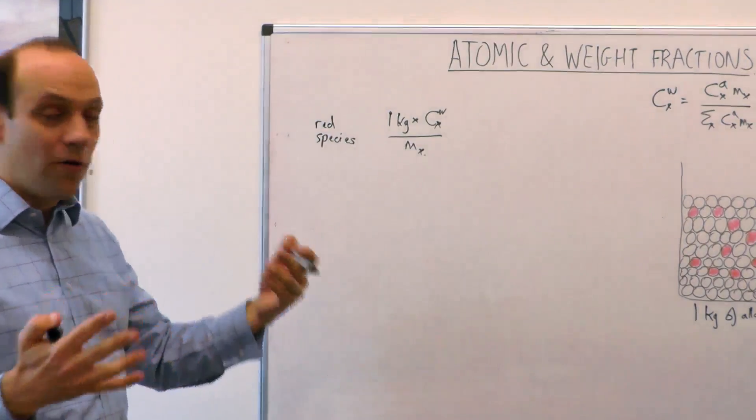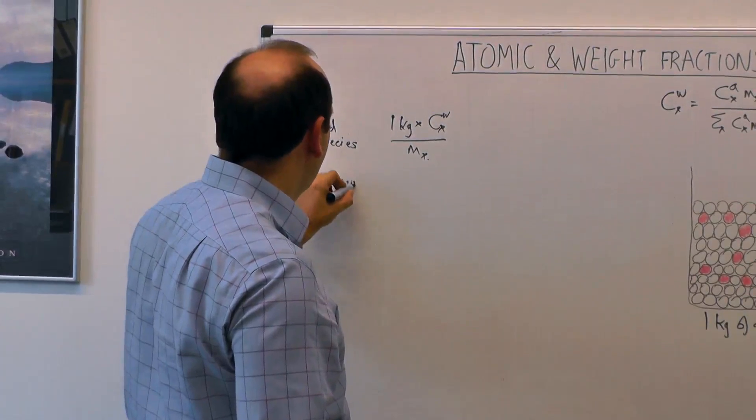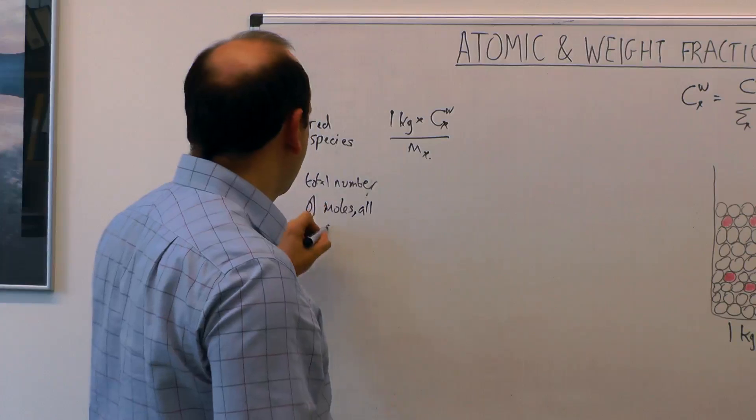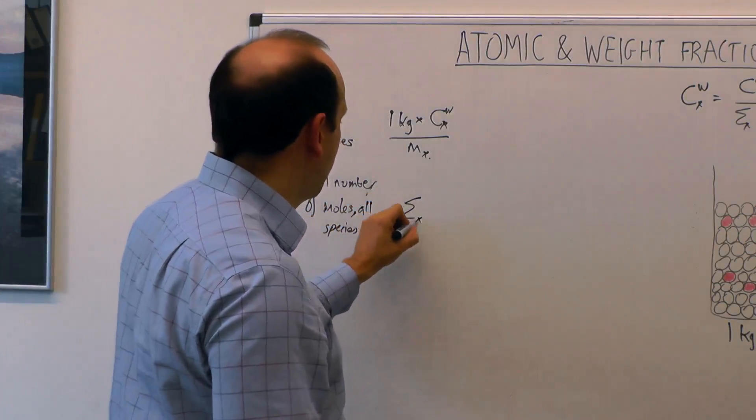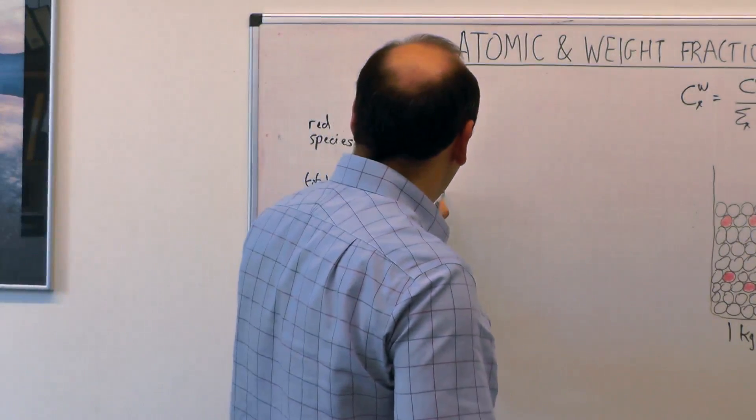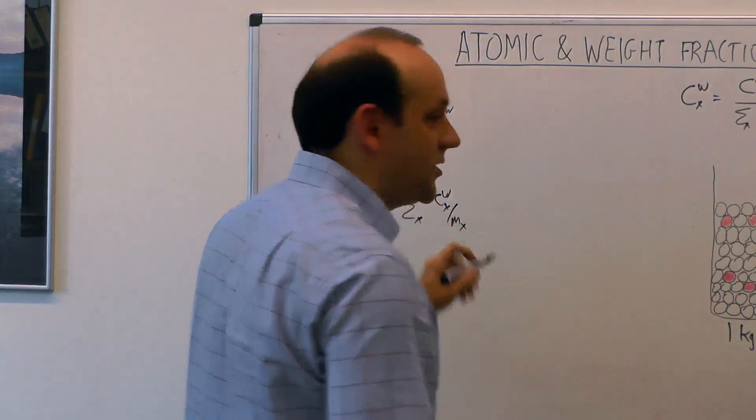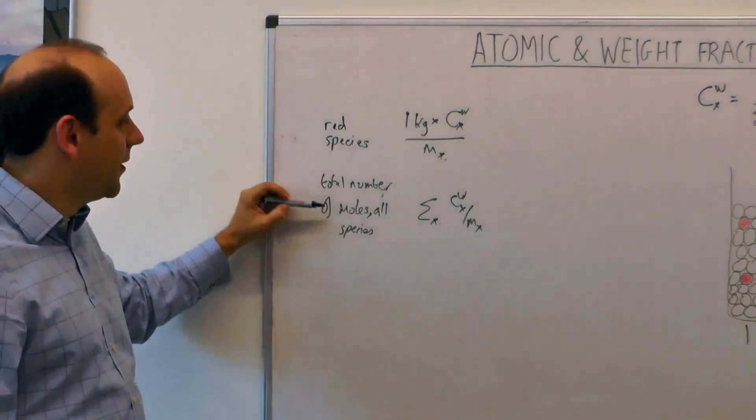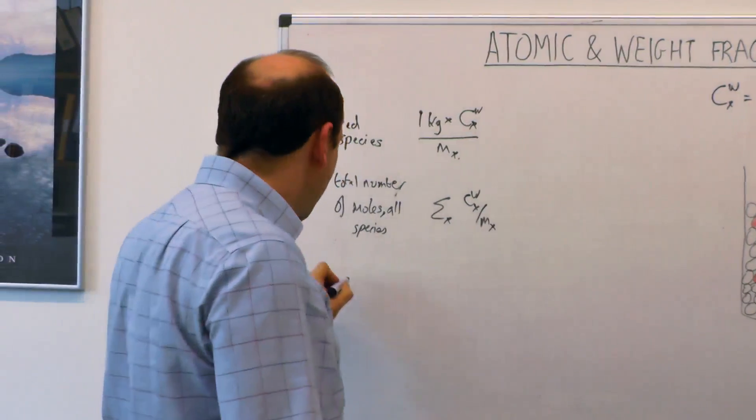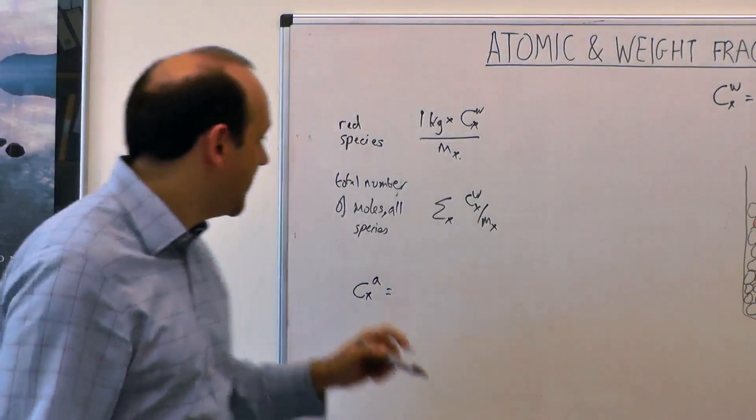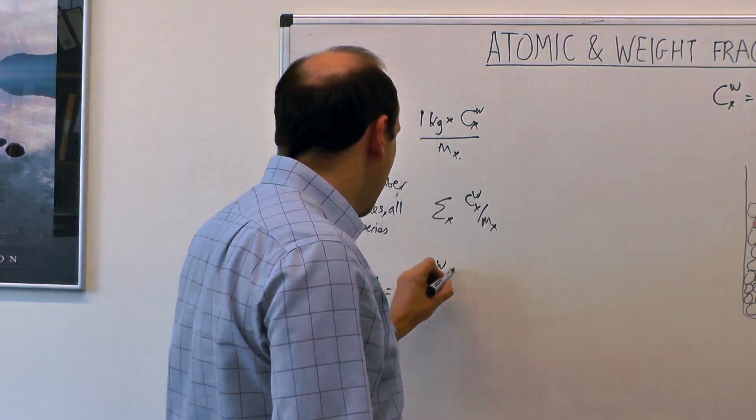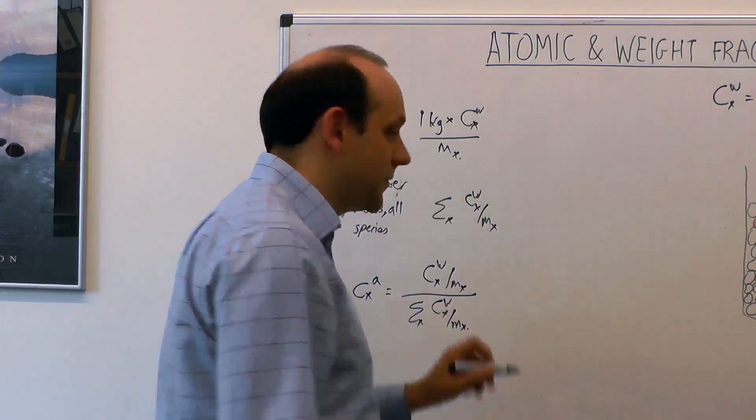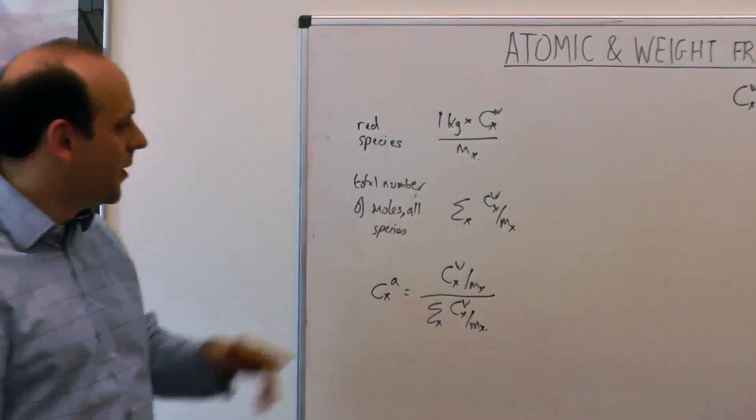That's the number of moles we have if we're doing everything in kilograms. Then we can sum that up over all of the total species. So the total number of moles over all species is the sum over all x of composition in weight divided by the molar mass of each x. If we want to know the composition in atomic percent, we take the fraction of the total that are red atoms or whichever it is. So the composition in atomic fraction is then just c w x over m x divided by the sum over x of c w x over m x.